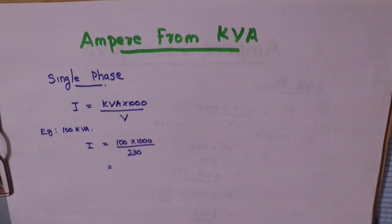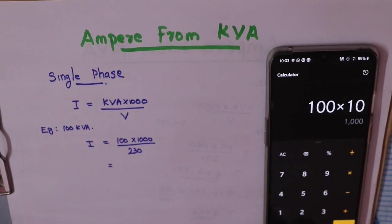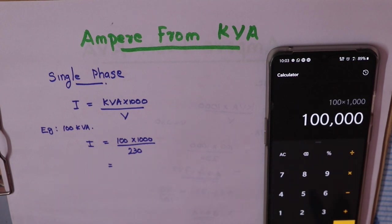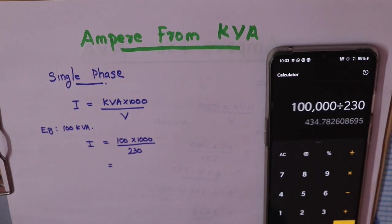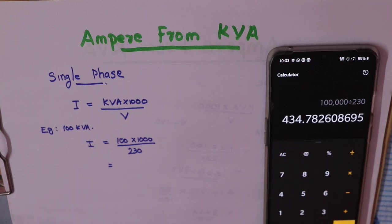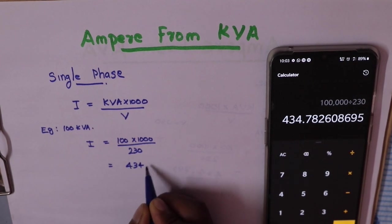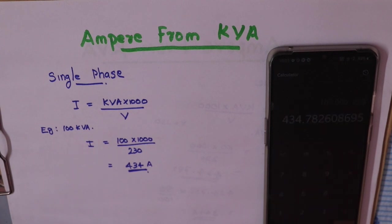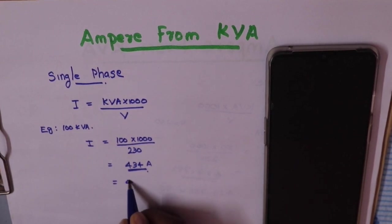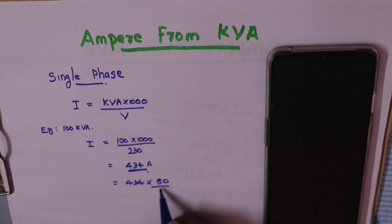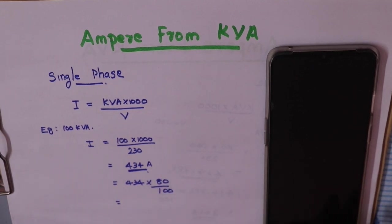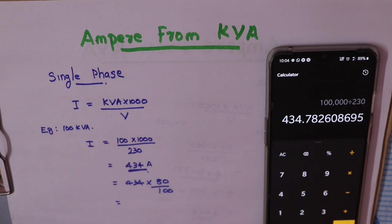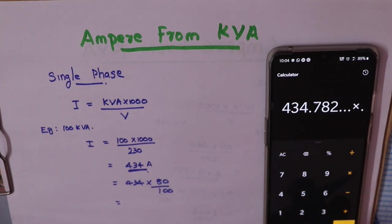The calculation is: 100 × 1000 divided by 230, which gives us approximately 434.78A. Then we multiply by the power factor of 0.8.